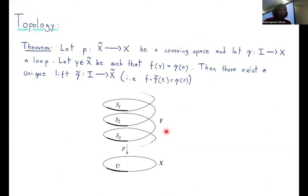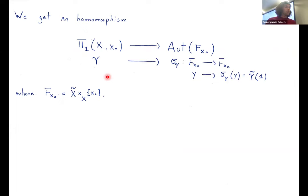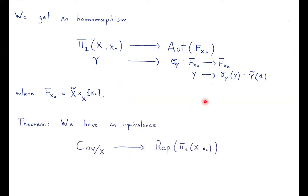Using this theorem, I'm going to talk about a representation of the fundamental group. We have an action of the fundamental group of a topological space in the fiber of the base point. The action is given by the following morphism: if we start with a loop in our space, then we have the following morphism in the fiber of our base point. F(x₀) is the fiber of this point.